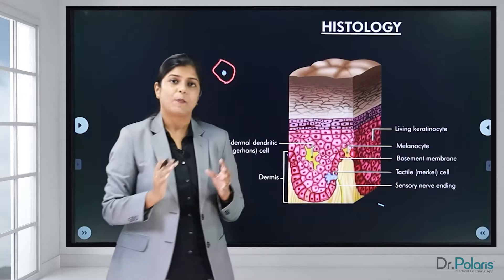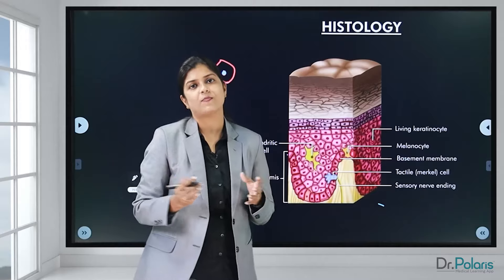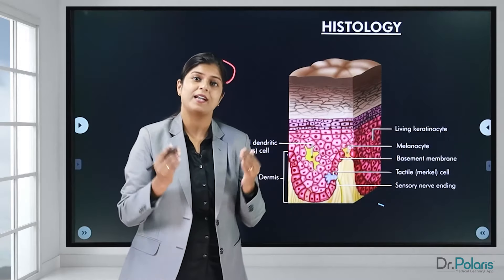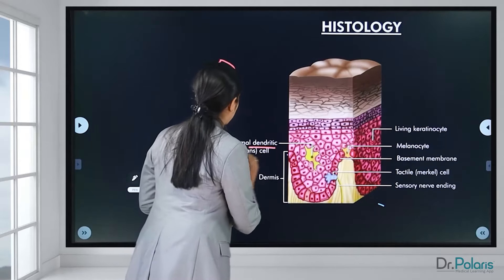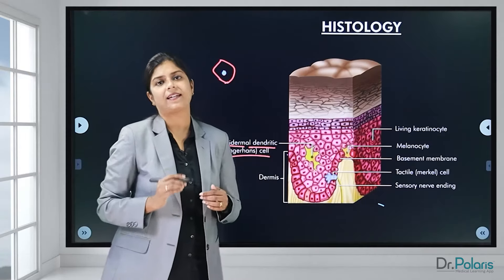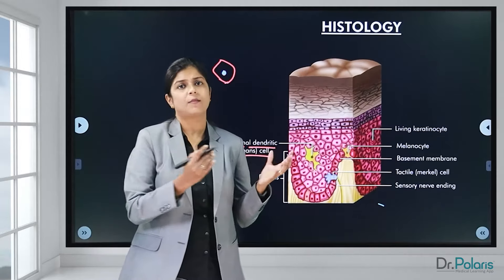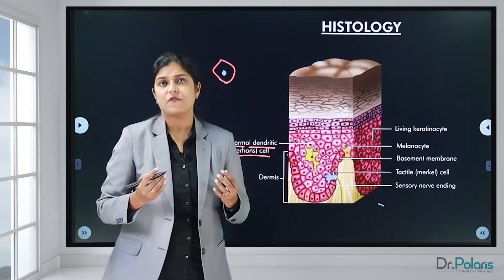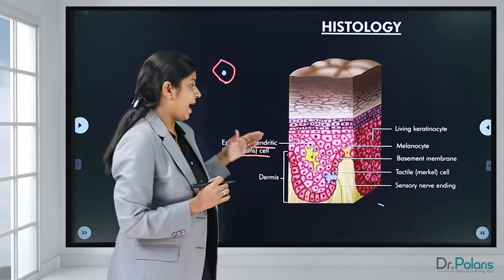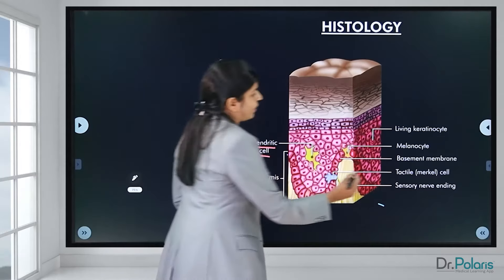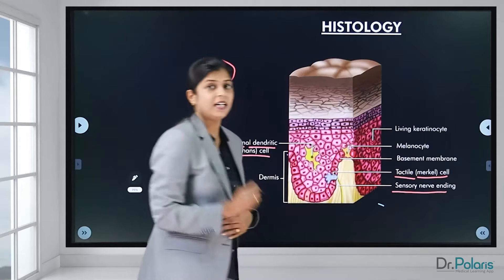Apart from the keratinocytes, we have the melanocytes — cells which produce the brown pigment melanin, responsible for the color of the skin and protection from harmful UV light. Other cells are the epidermal dendritic cells, which act as antigen-presenting cells. Whenever we come across microorganisms or allergic factors, these cells take them up and send them to the lymphatics as a defense mechanism. We also have tactile Merkel cells for touch sensation, and many sensory nerve endings.